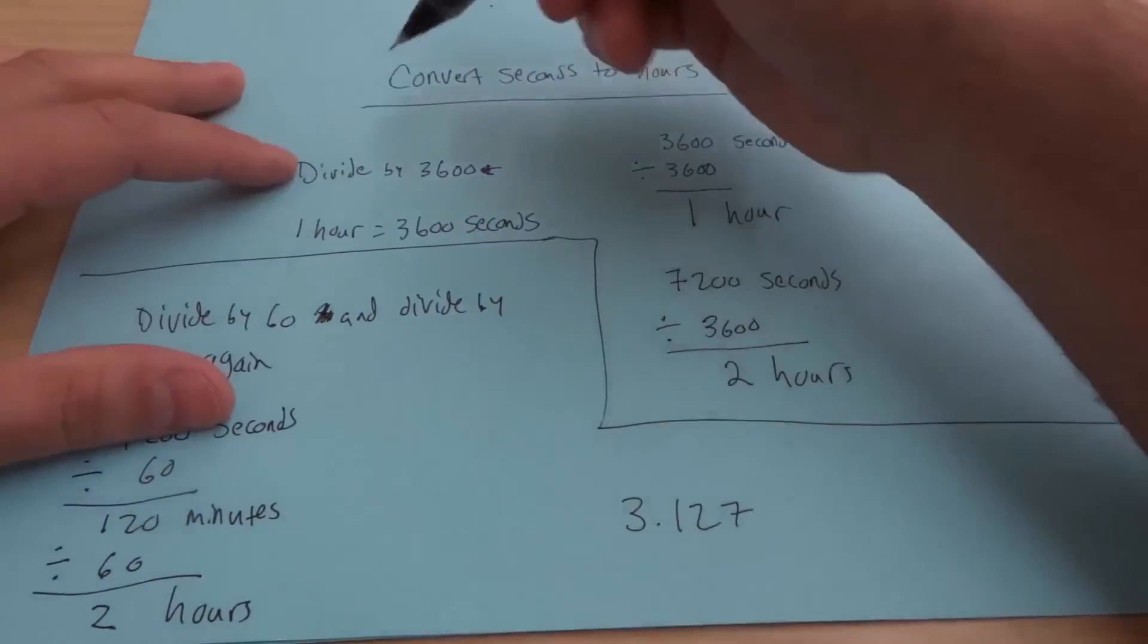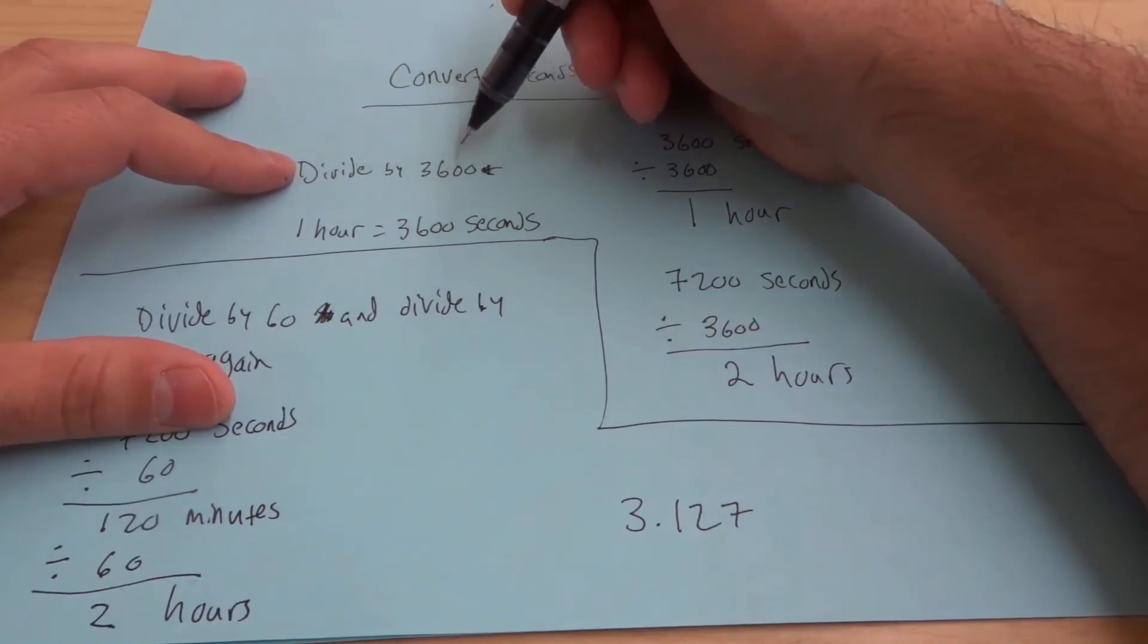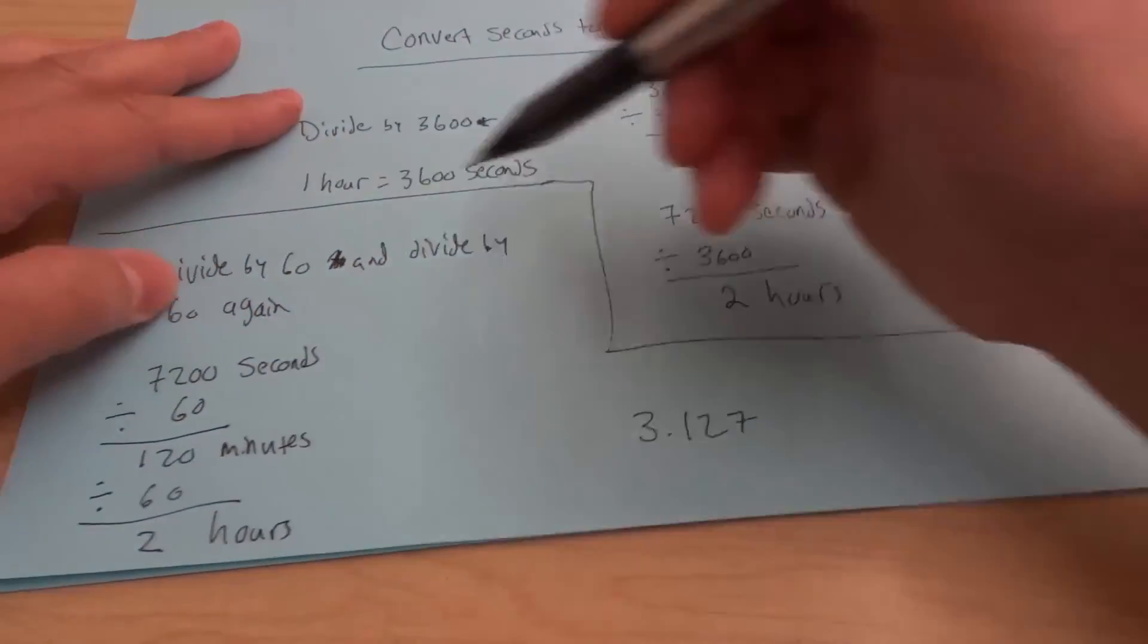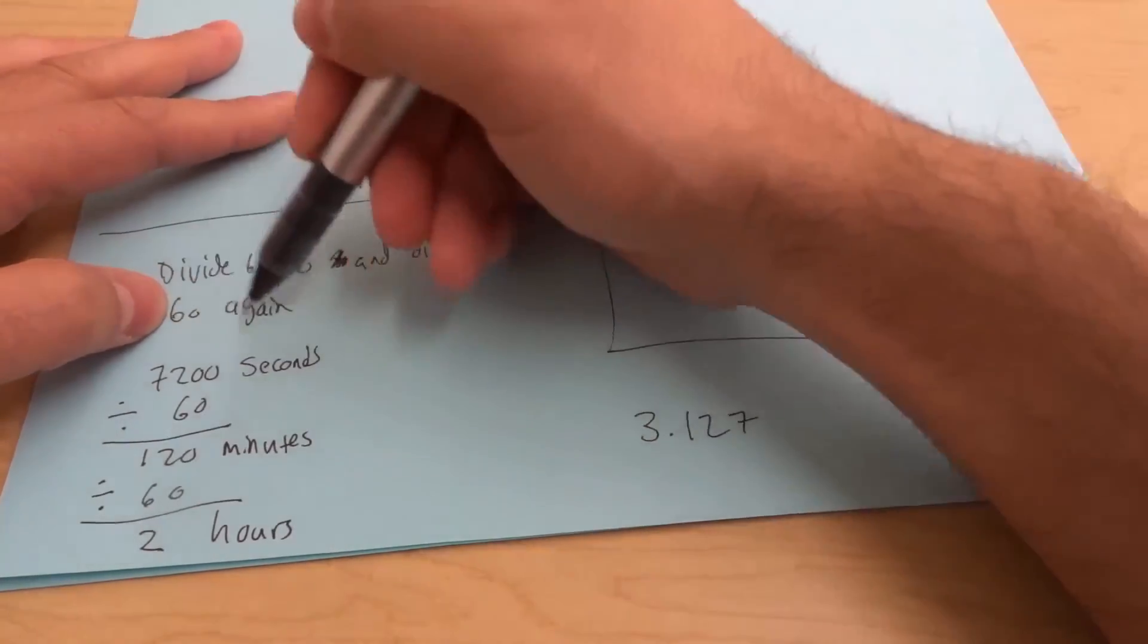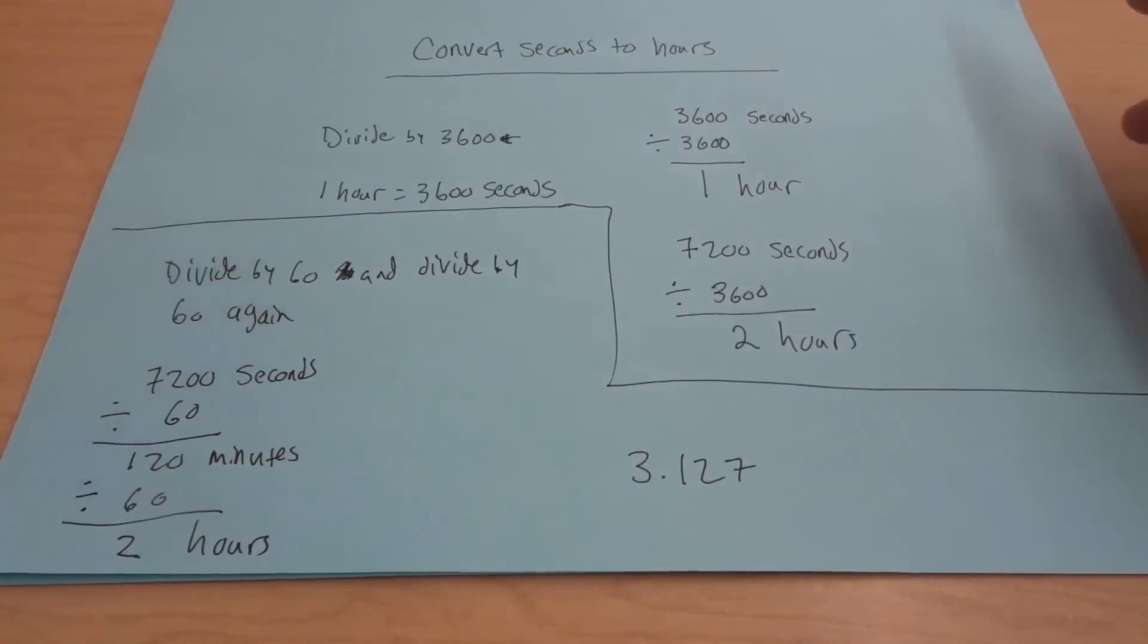So you can just basically divide the number of seconds by 3,600, like that. Or you can divide it by 60 and then divide the new number, the new answer, by 60 again. And that will give you the answer. That's how to convert seconds to hours.